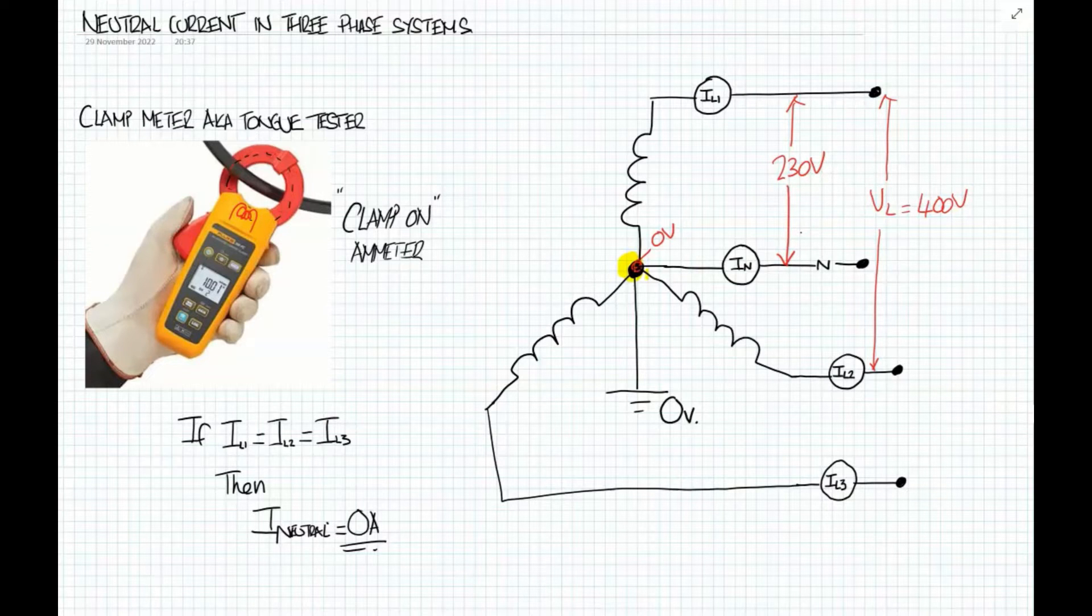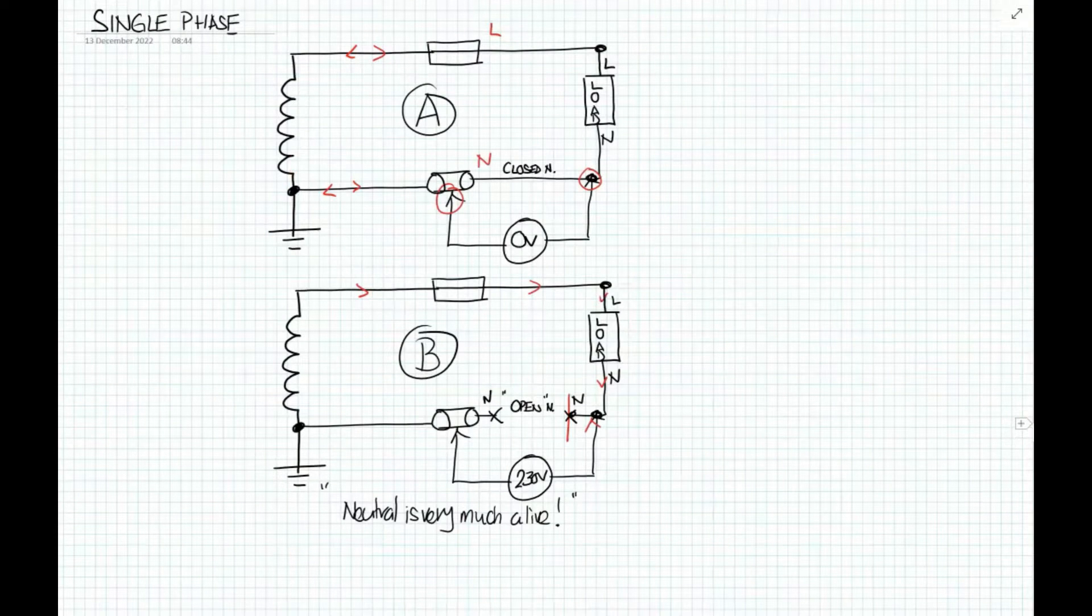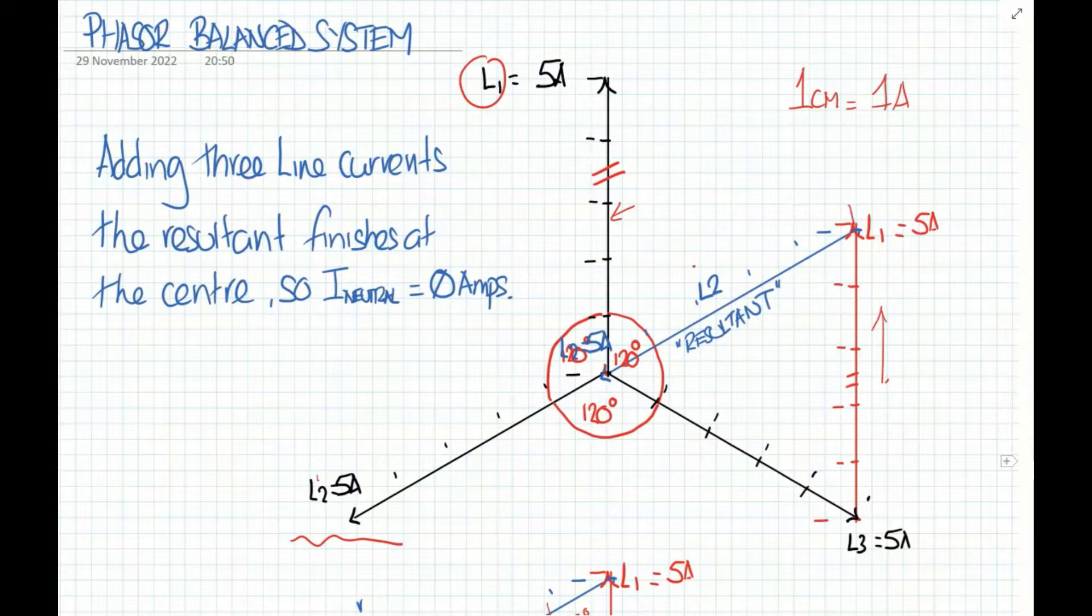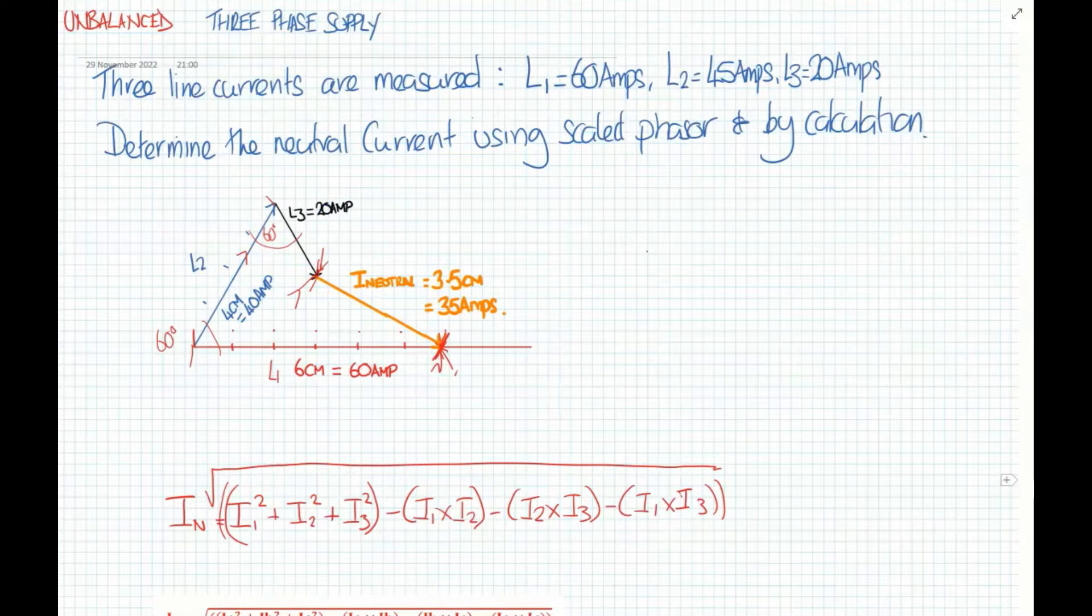In this short video we're going to look at three-phase currents, a single-phase installation to demonstrate that neutral is very much a live conductor, go through a worked example, talk about a balanced three-phase supply and why on a balanced three-phase supply the neutral current will be zero, and also look at an unbalanced three-phase supply.